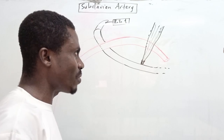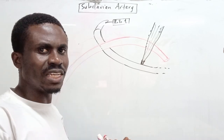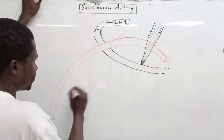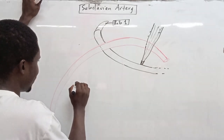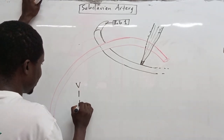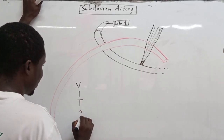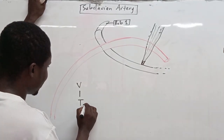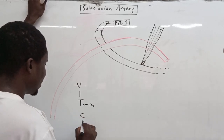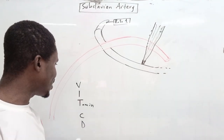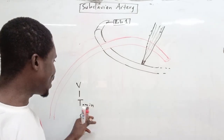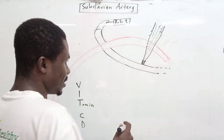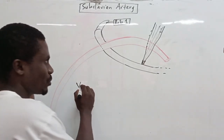To help understand the branches from all parts of the subclavian artery, there is a simple mnemonic: VITamin C D. The key letters are in capitals. So let's go through them one by one.